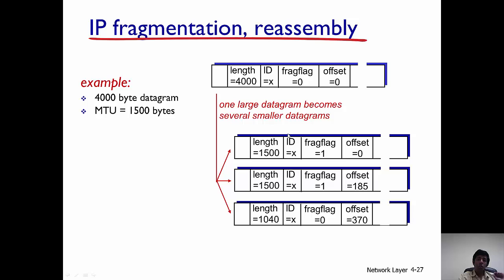The ID is X. It just says that this fragment belongs to an IP datagram of ID X. This ID X is going to be used to collect all the datagrams and put them together. Then a fragment flag of one is set and there's an offset of zero.